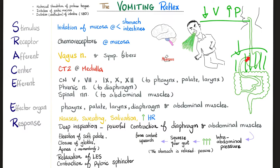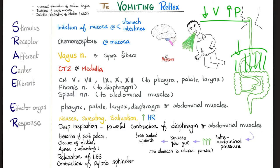You need to contract the pyloric sphincter because we're going upwards — we do not want to go downwards — and you need to relax the lower esophageal sphincter. One common mistake students make is assuming the stomach is contracted during vomiting. No — the stomach is passive and relaxed during vomiting. What squeezes it is your diaphragm and abdominal muscles.